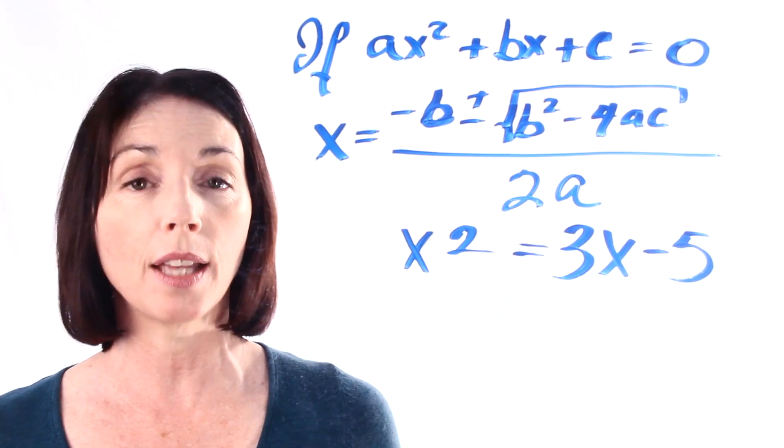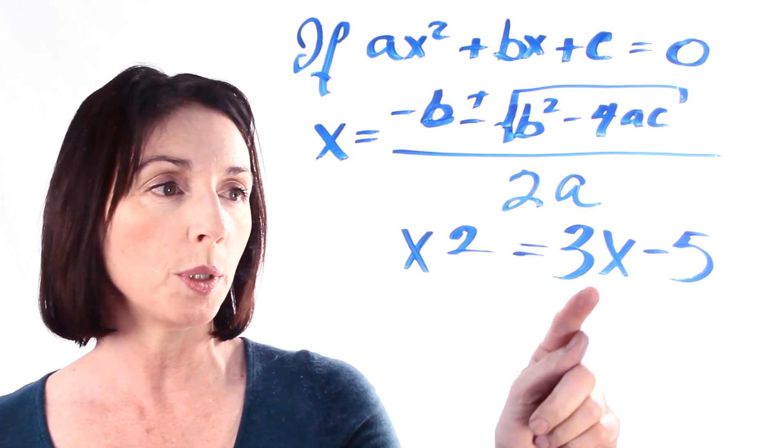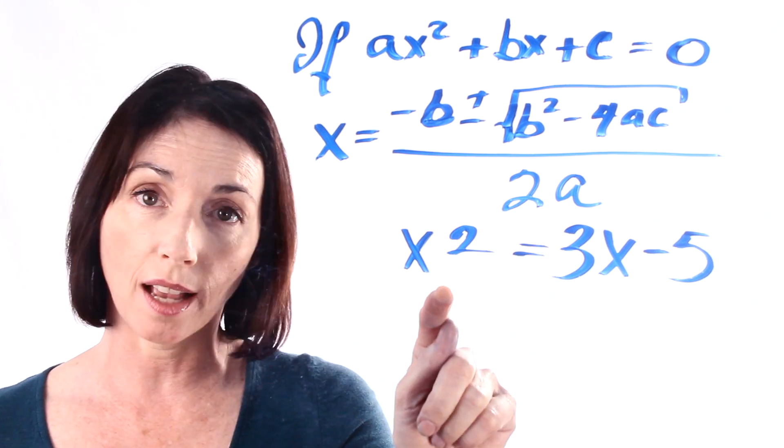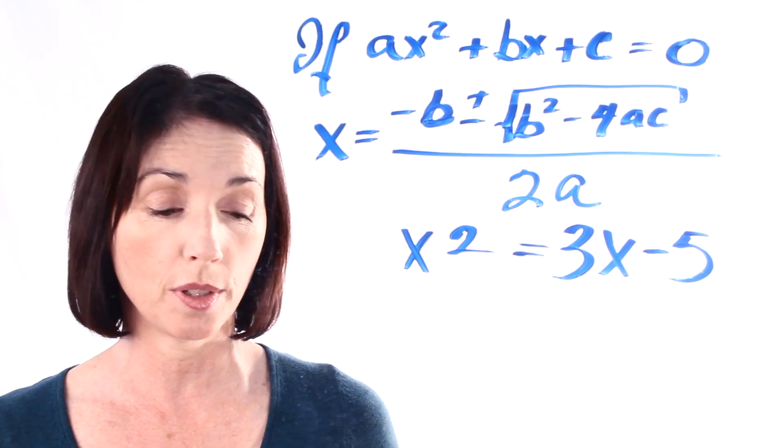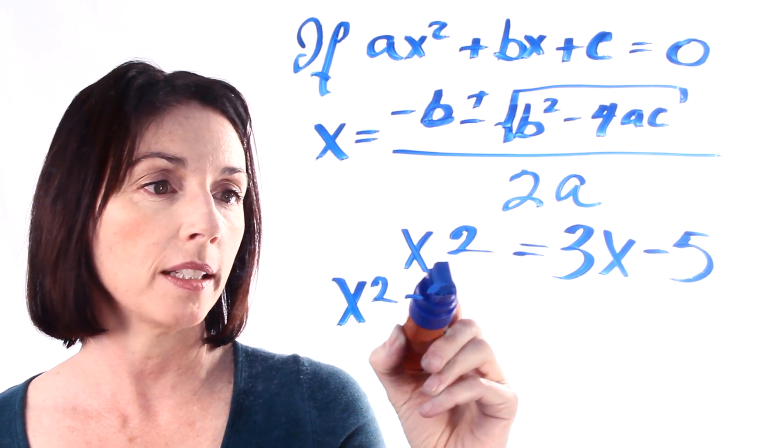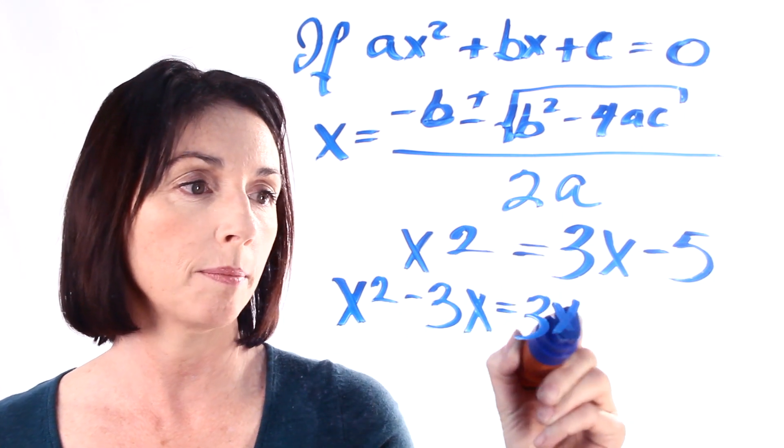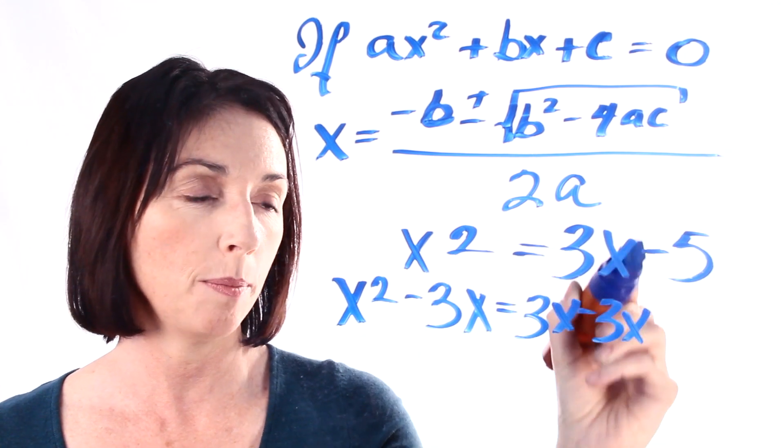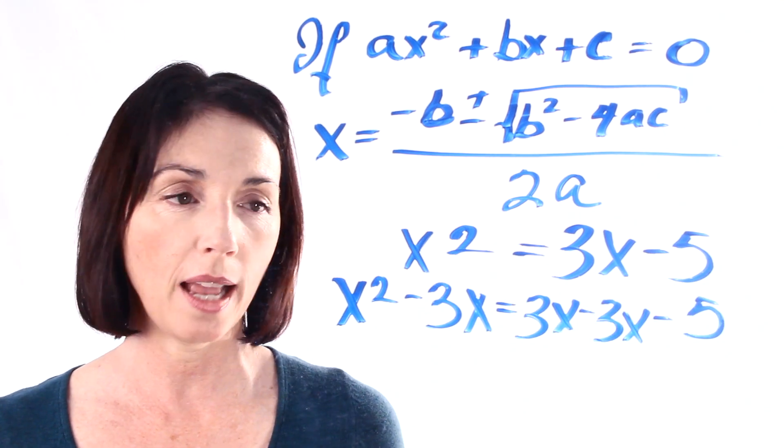So we're going to do a little algebra and rearrange it so that we can use the quadratic formula. So we want to move this 3x over to this side of the equation and since we're adding 3x here, we can do that by subtracting 3x from both sides. So we have x squared minus 3x equals 3x minus 3x and we keep our minus 5. Now 3x minus 3x is just zero so that goes away.